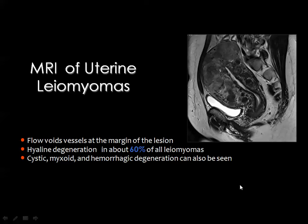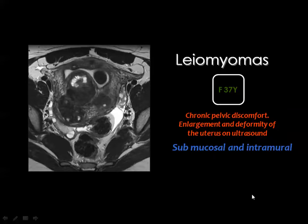The usual MRI signal is dark on both T1 and T2, but cystic changes produce dark T1 and bright T2 signal, while hemorrhage may appear bright on both T1 and T2. Multiple uterine fibroids may include a submucous fibroid, one with degenerative changes, and intramural or interstitial fibroids within the myometrium, with the adjacent rectum containing fecal material.